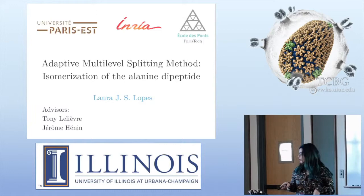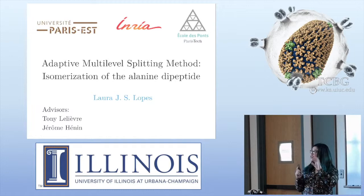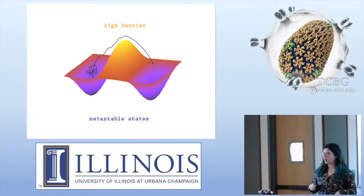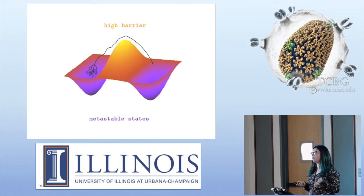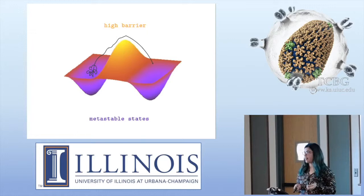I came from an applied mathematics lab, but I'll show you I have almost no equations. So, what is the idea? This method was developed by two people in France. The objective is to sample trajectories for rare events and obtain a probability.